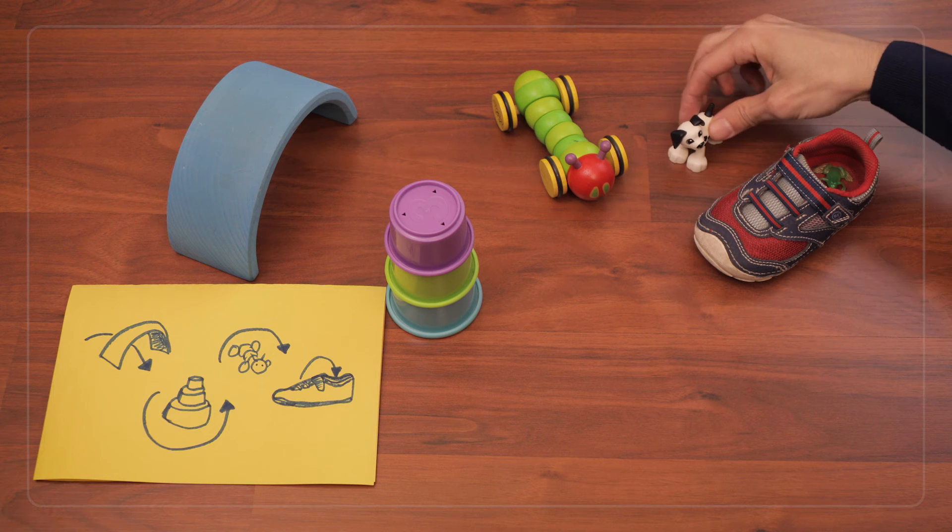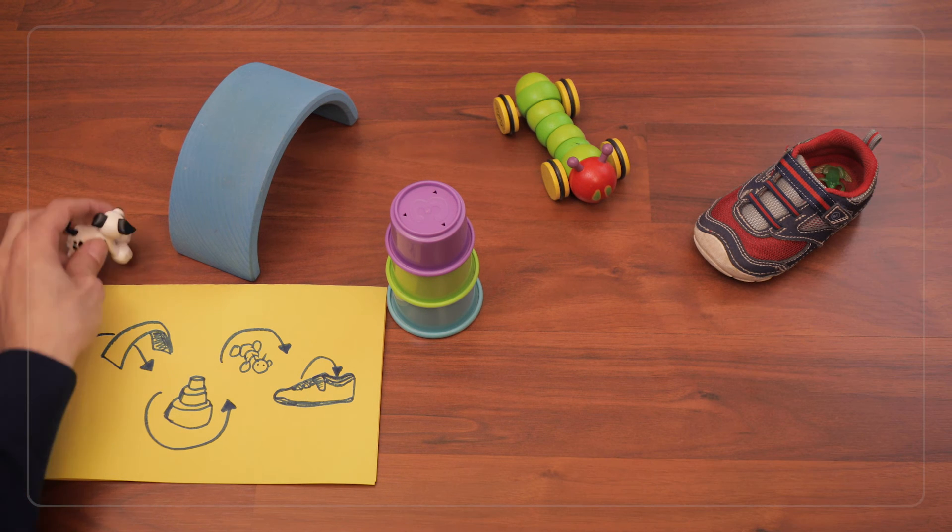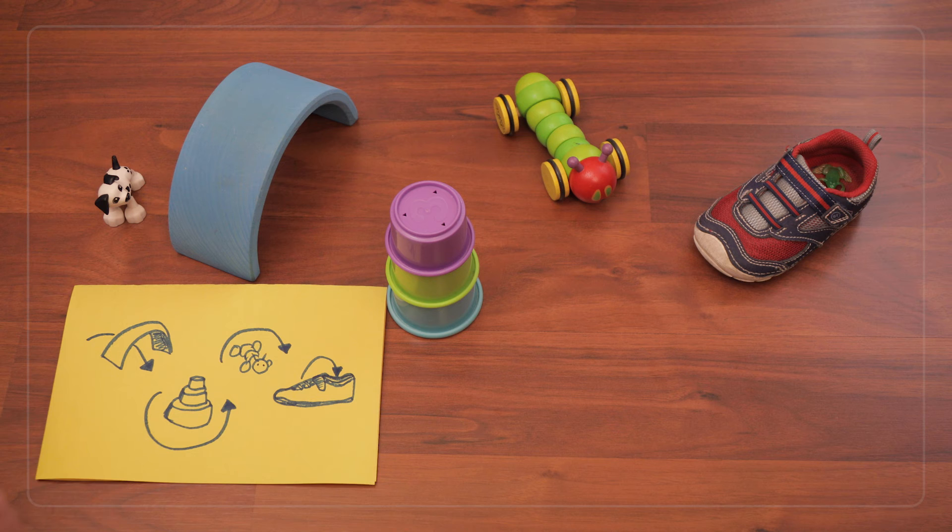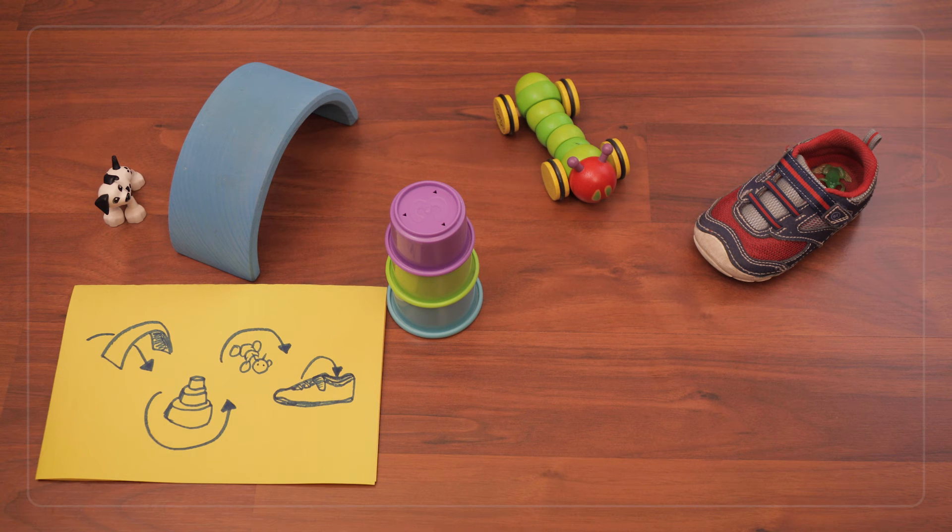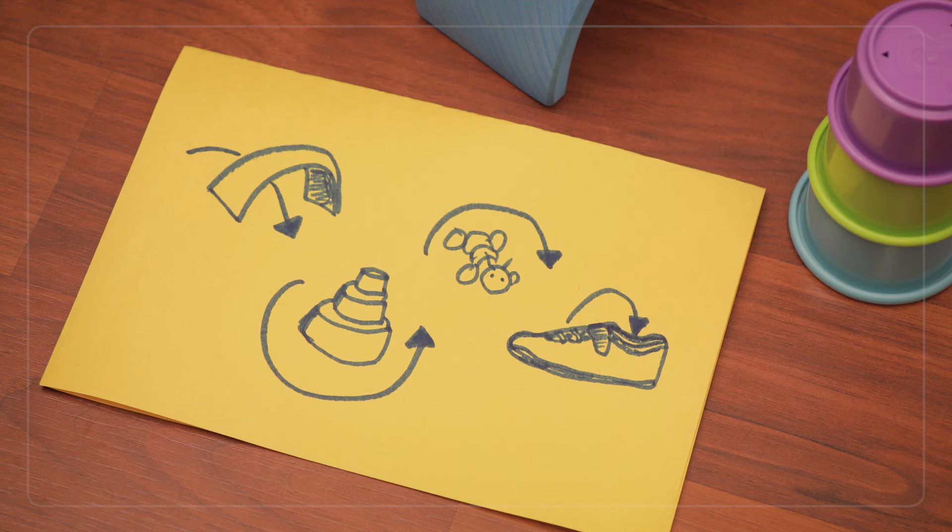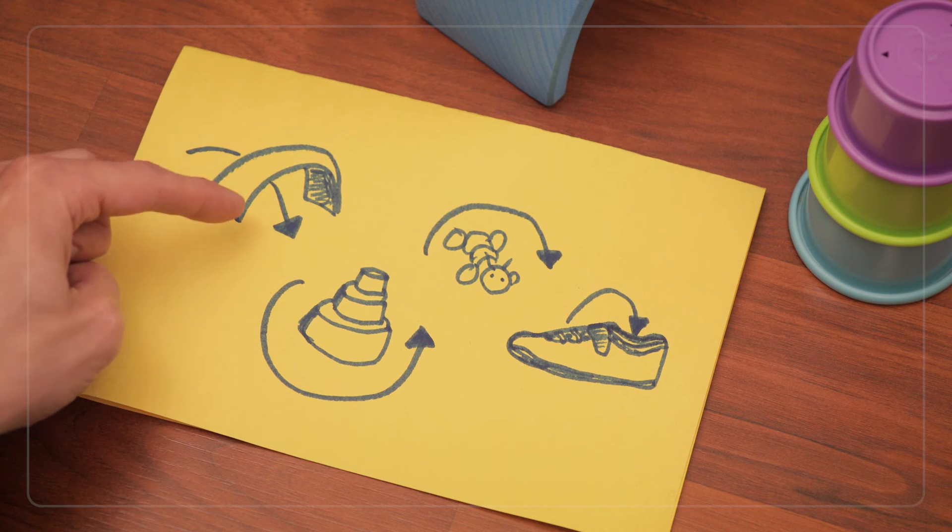At each step of the obstacle course, you can ask questions like, what does your map say to do at the arch? Does it say to go over or under the arch? Then they can look at their map and see that they drew an arrow underneath the arch, and they'll know to go under the arch.